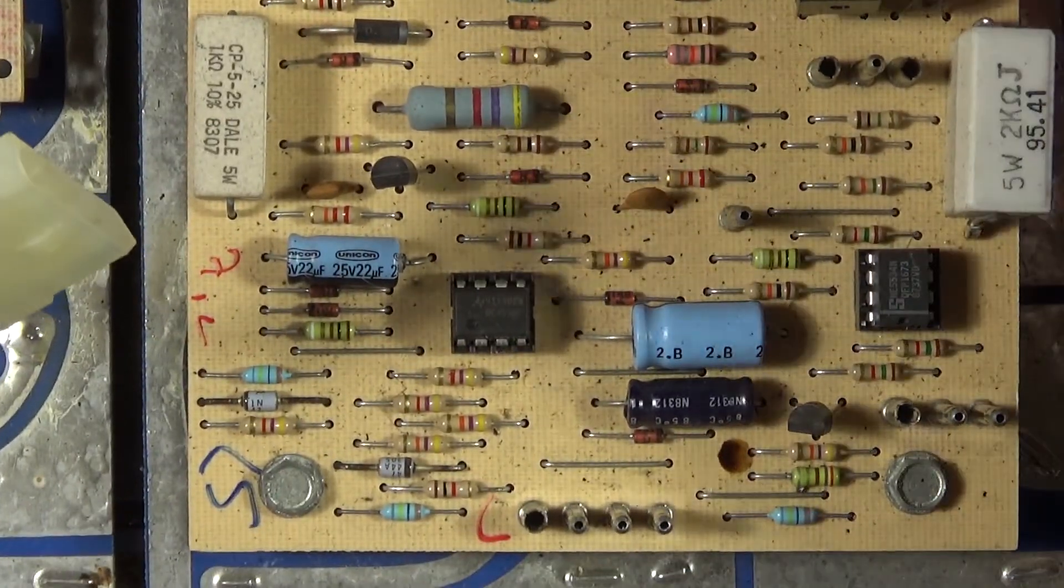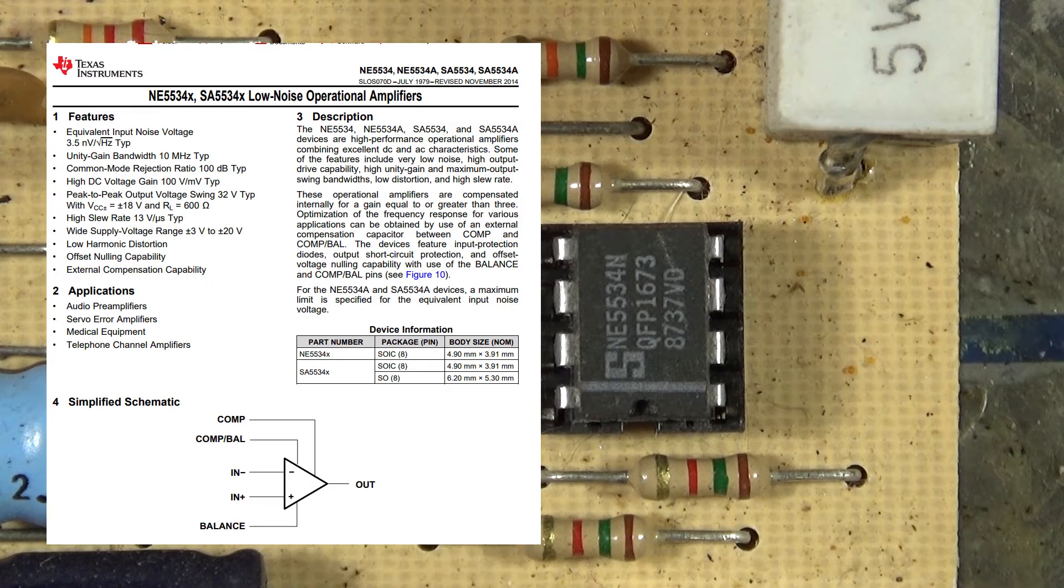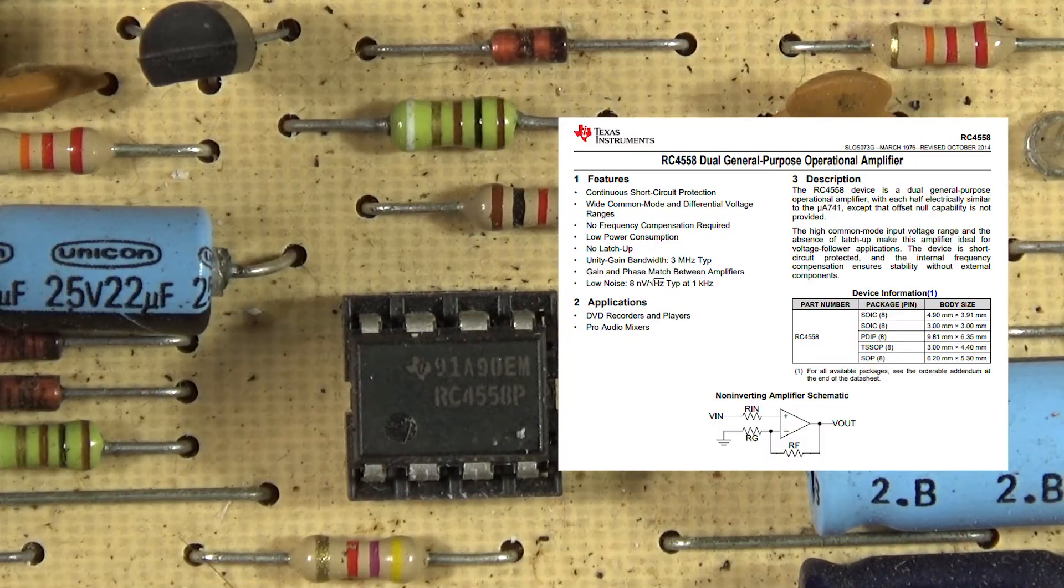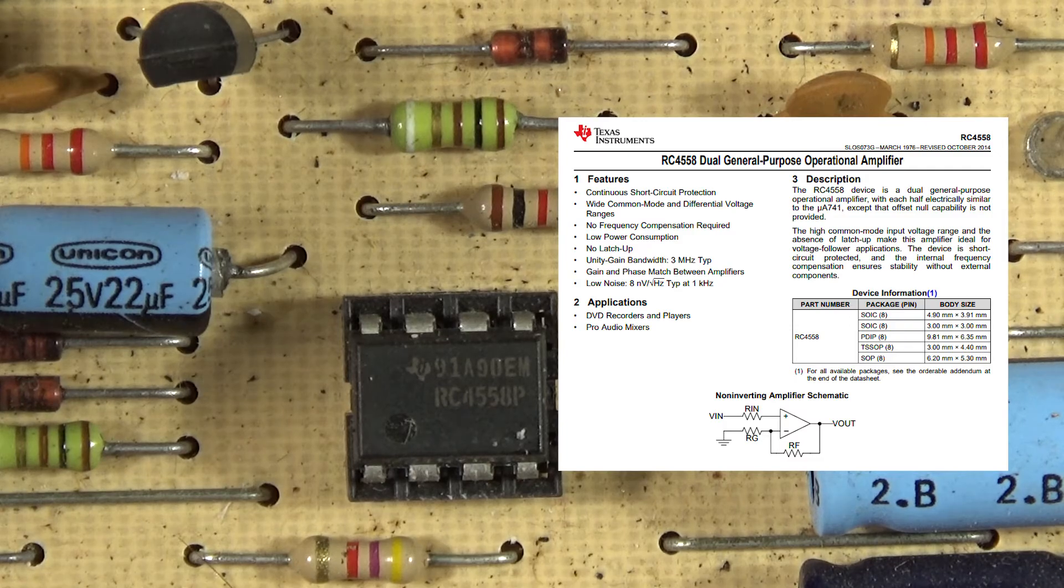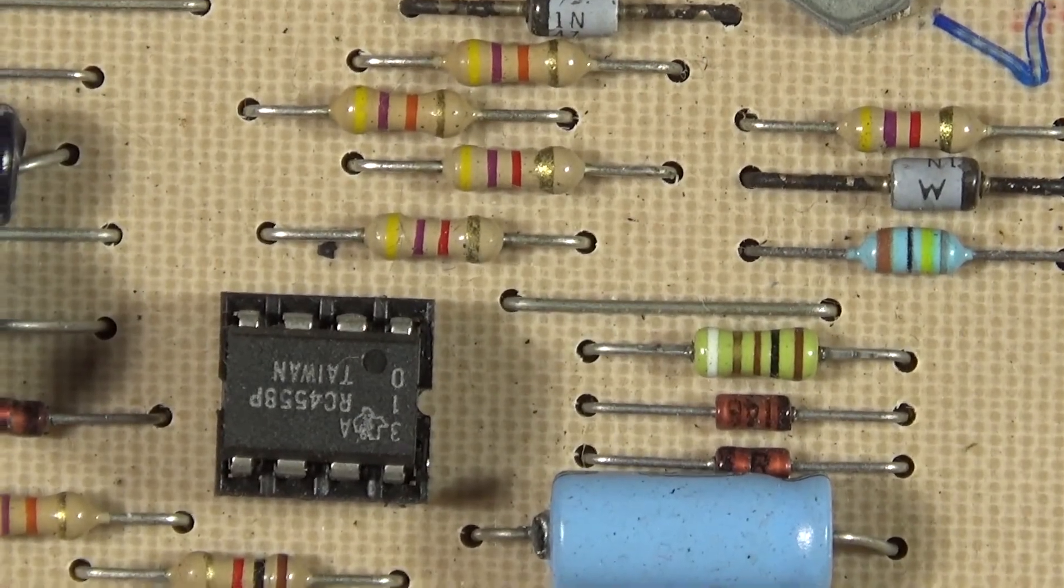And we've just got one of these op-amps. NA5534N, RC455BP, by Texas Instruments. And yeah, both these boards are identical, just flipped.